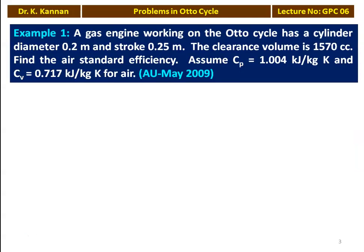The first example is from the question paper May 2009. A gas engine working on an Otto cycle has a cylinder diameter of 0.2 meter and stroke length 0.25 meter. The clearance volume is 1570 cc. Find the air standard efficiency. Assume Cp equal to 1.004 kJ/kg·K and Cv equal to 0.717 kJ/kg·K for air.